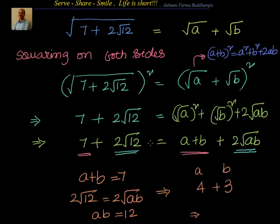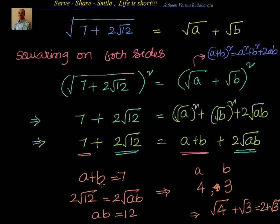So a is 4 and b is 3. The square root will be root of 4 plus root of 3, which is equal to 2 plus root 3. You can cross-check that: take 2 plus root 3 and square it, you will get exactly 7 plus 2 root 12. By intuition, you can look and easily see two numbers that add up to 7 and multiply to 12.